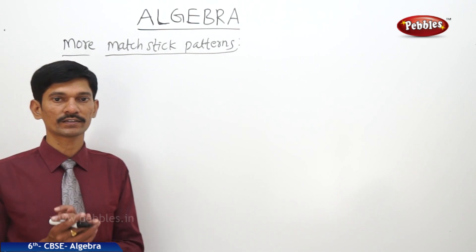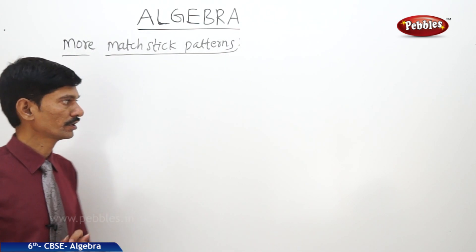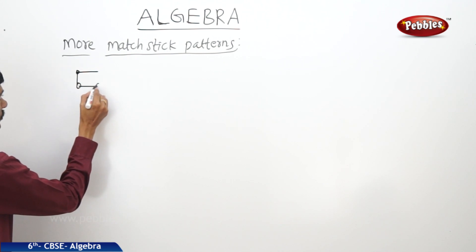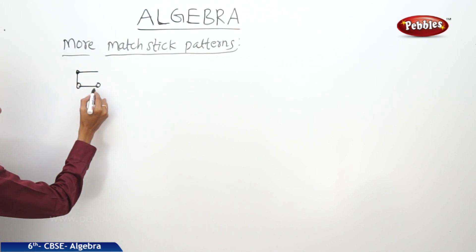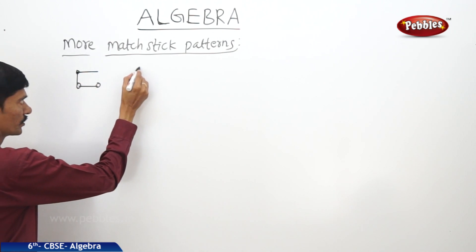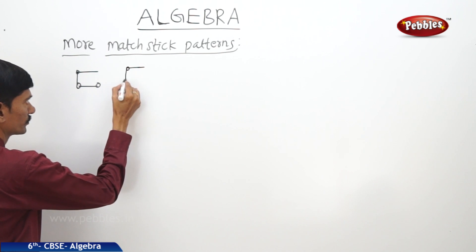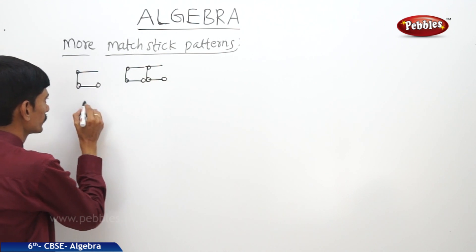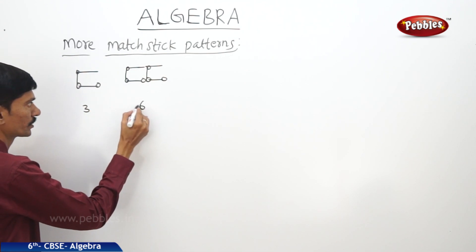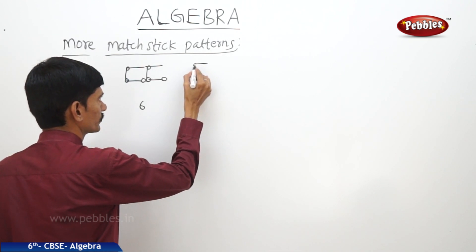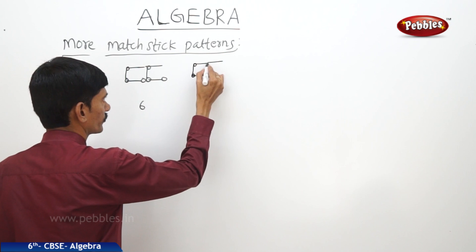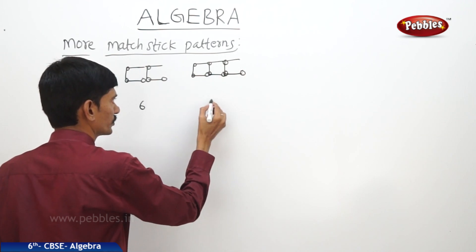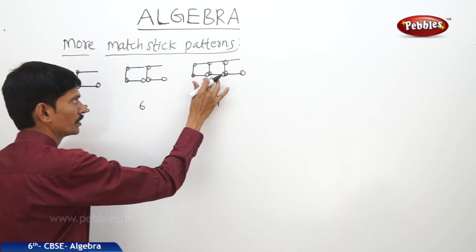To form one letter C, we need one, two, three matchsticks — so three matchsticks are required. To form two letters C, we need one, two, three, four, five, six matchsticks — so six matchsticks. And to form three letters C, we need one, two, three, four, five, six, seven, eight, nine matchsticks — so nine matchsticks are required to form three C's.